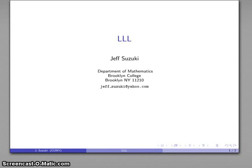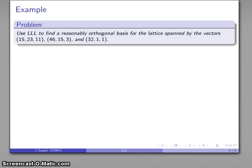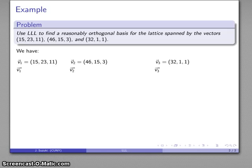Let's take a look at another example of LLL, this time for a three-vector lattice. I'll have three vectors that span our lattice: say (15, 23, 11), (46, 32, 1), and (1). It doesn't really matter what order I put the vectors in, so I'll go ahead and use the stated order.